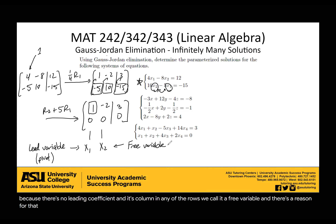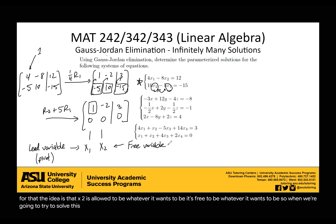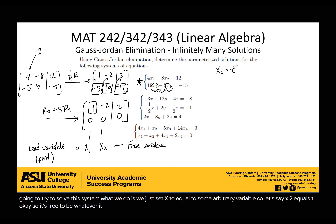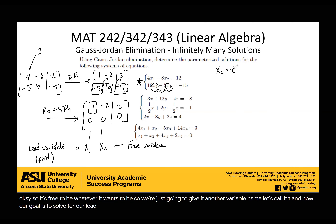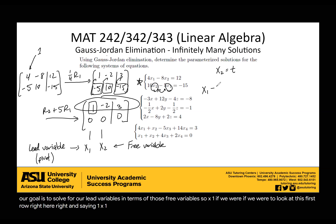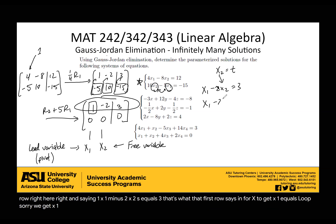There's a reason we call it a free variable — x2 is allowed to be whatever it wants to be. So when solving this system, we set x2 equal to some arbitrary variable; let's say x2 equals t. Our goal is to solve for our lead variables in terms of those free variables. Looking at the first row, it says 1·x1 minus 2·x2 equals 3. Substituting t in for x2, we get x1 minus 2t equals 3, and adding 2t over, we get x1 equals 2t plus 3.